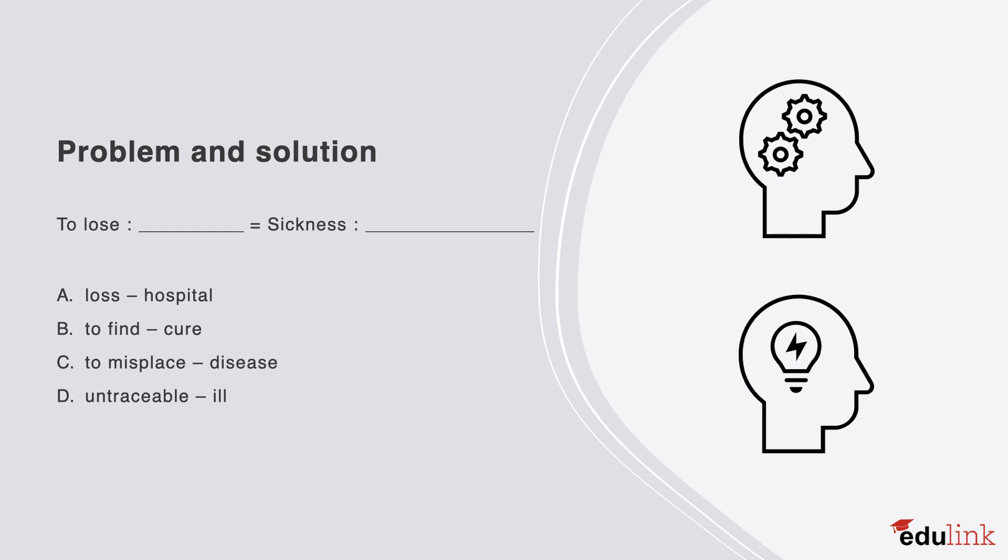We're almost there. The penultimate relation type is problem and solution. Consider the following options. The correct answer is B. When losing something is the problem, then to find it is the solution. And likewise, when sickness is the problem, then a cure is the solution.